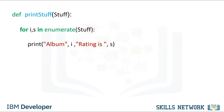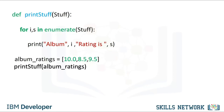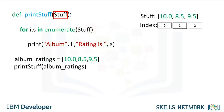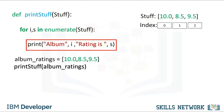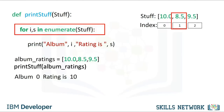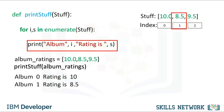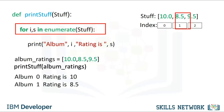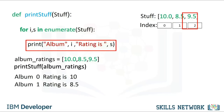We can use loops in functions. This function prints out the values and indexes of a list or tuple. We call the function with the list album_ratings as input. Stuff is used as input to the function enumerate, which passes the index to i and the value to s. The function iterates through the loop, printing the first index and first value, then continuing — the values of i and s are updated — until the final values in the list are printed out.